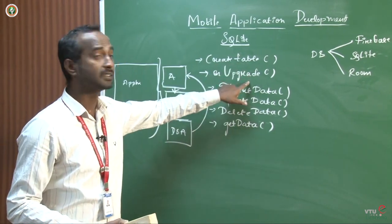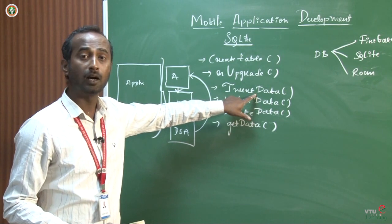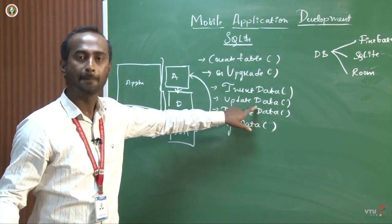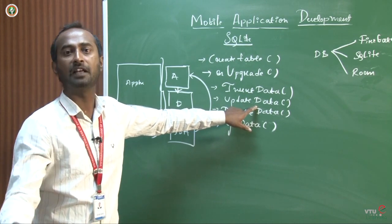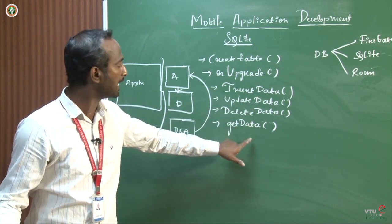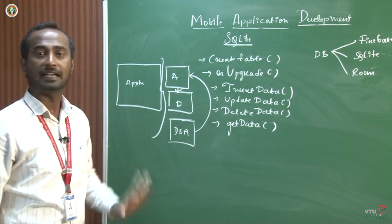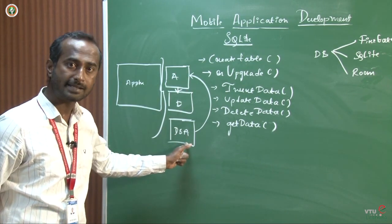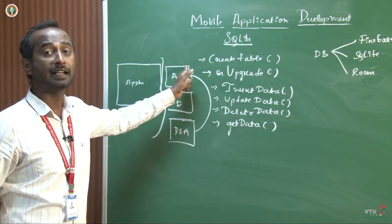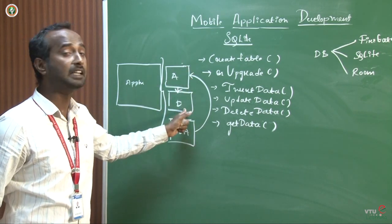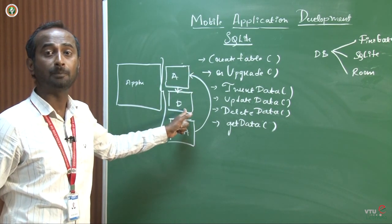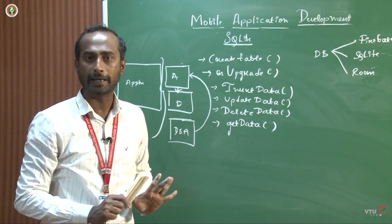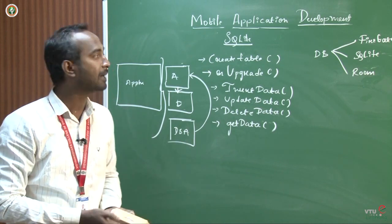These are the six methods you must know before using the SQLite database. First is to create the table, second is to upgrade the table, third is to insert data, fourth is updateData, fifth is deleteData, and sixth is getData. Directly you cannot use the database in the Java part — instead you have to create a helper class, which is accessed using the Java part and in turn helps the design part execute the logic.